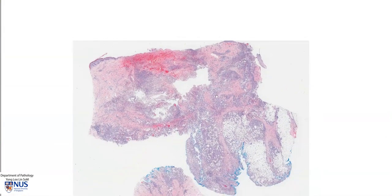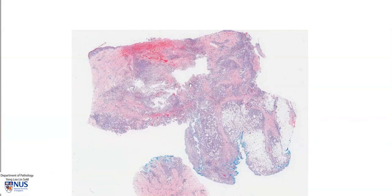In summary, this is an example of a carbuncle where we have a large area of acute suppurative inflammation with abscess formation involving the dermis and the subcutis. A carbuncle usually occurs with infection and acute suppurative inflammation involving several hair follicles. Thank you.